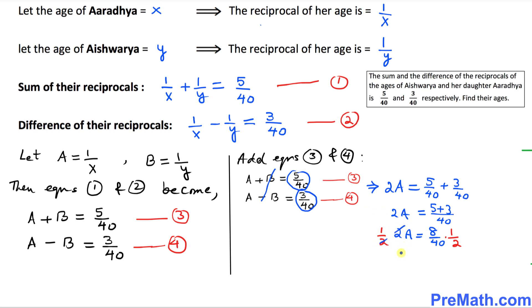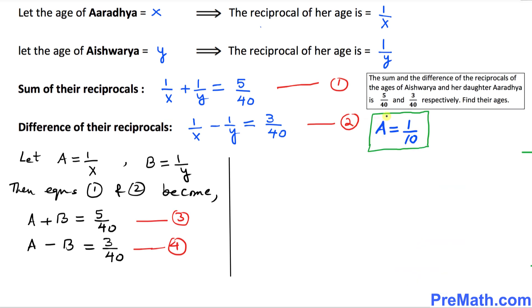To isolate A, we multiply both sides by 1/2. The 2 cancels, and 8/40 divided by 2 gives 4/40, which simplifies to 1/10. So A = 1/10.